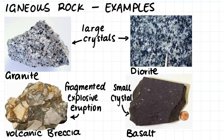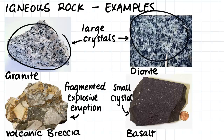Firstly, the granite and the diorite has quite large crystals, which indicates that they cooled much more slowly. Then the basalt over here has quite small crystals that can hardly be seen with the naked eye. These small crystals indicate that the basalt cooled very quickly.